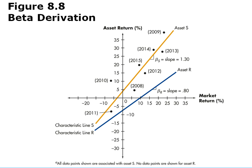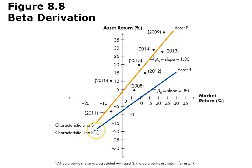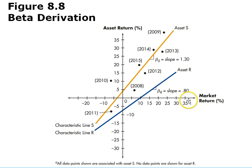Here is a chart where we plot beta. We have the asset return on one axis and the market return on the other. There is a characteristic line for asset R and a characteristic line for asset S. We can measure the slope, which represents the beta. Here the slope — the beta — is 1.3, and here the beta is 0.8. The stock with the higher beta will have higher returns relative to market returns, and the stock with a beta less than 1 will have lower returns compared to the market.